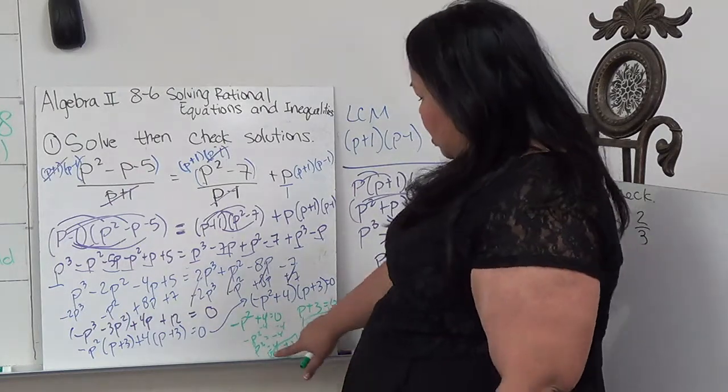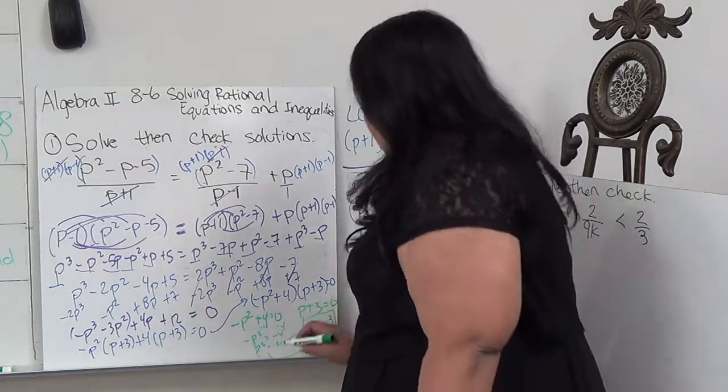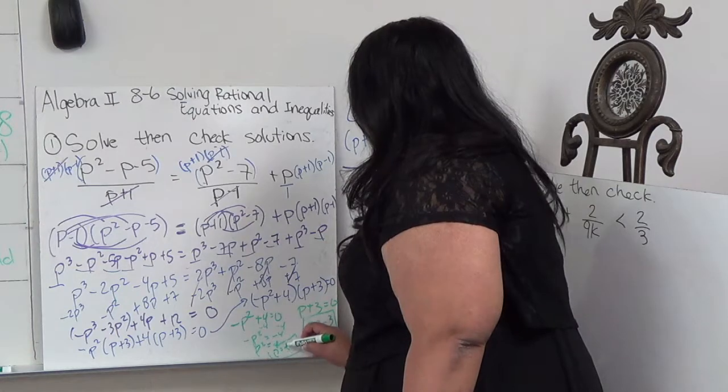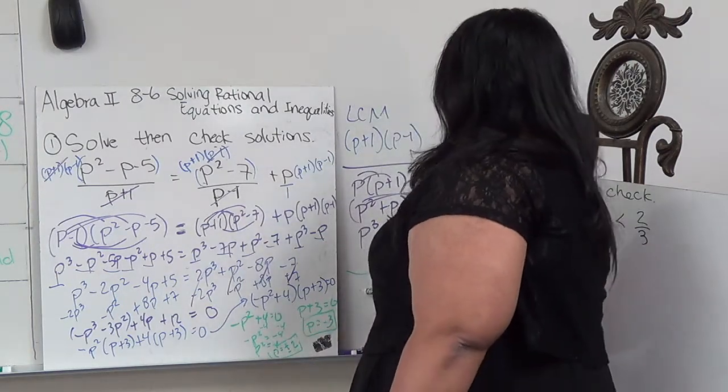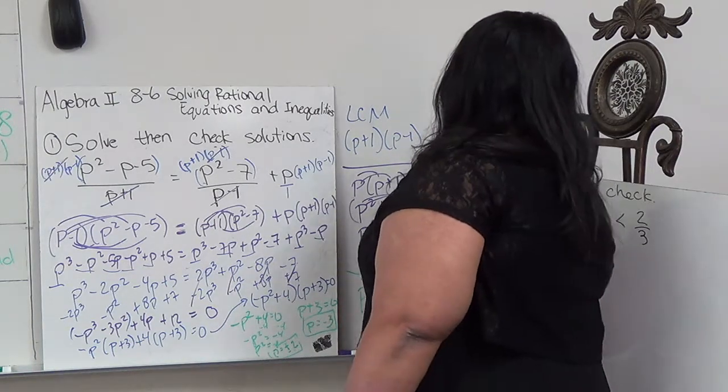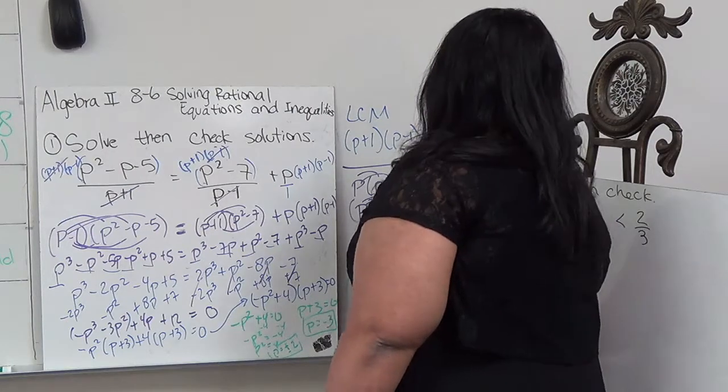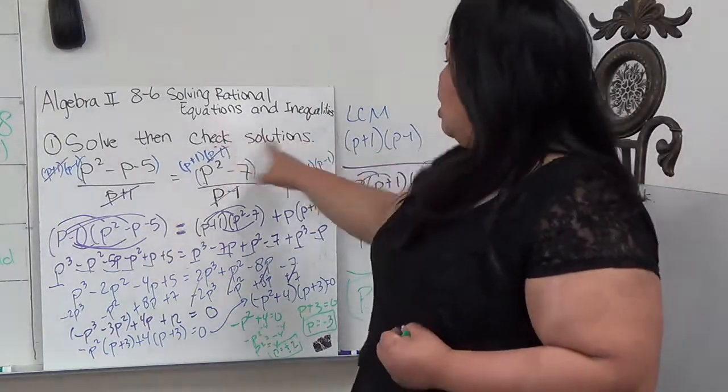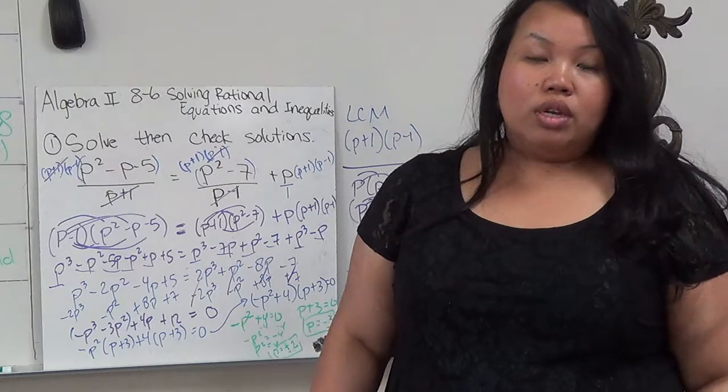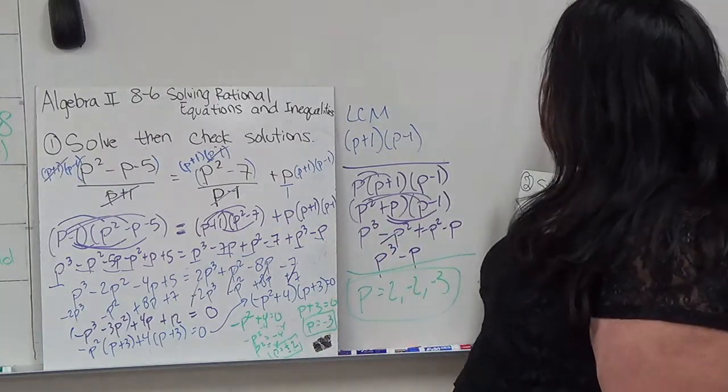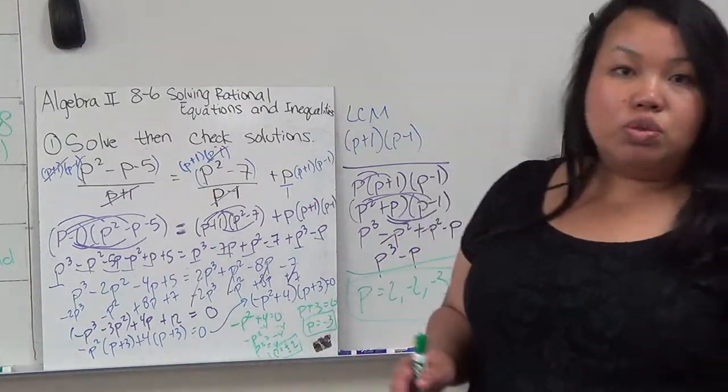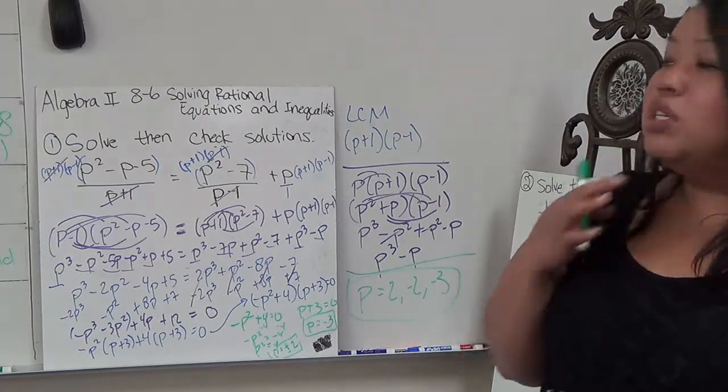So our three answers are P equals 2, negative 2, and negative 3. Now, it says to check the solution. So I have to plug in each one of these three to see if they all work, to make sure that it is an answer. But I don't want to waste your time. We all know how to do that. If you don't end up with the same number on both sides, then it's wrong. So it's not guaranteed that all three work, but those are the three solutions to test.